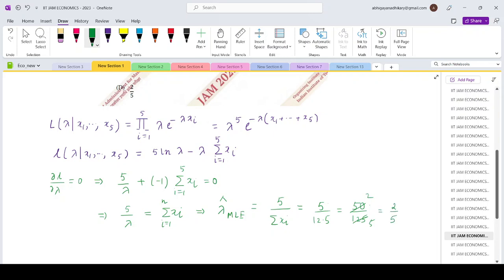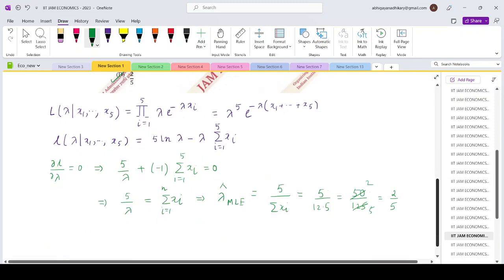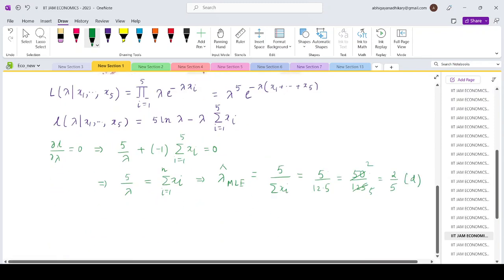So that gives me our answer as 2 by 5, which is option number D.